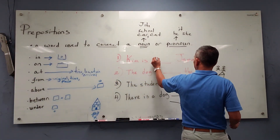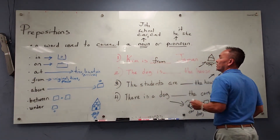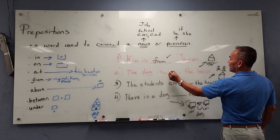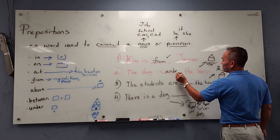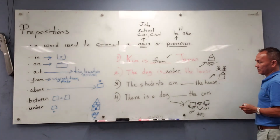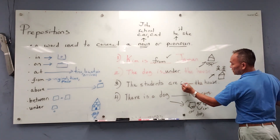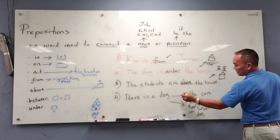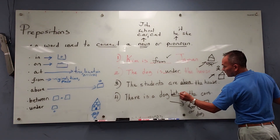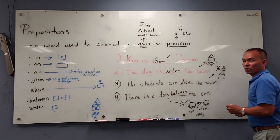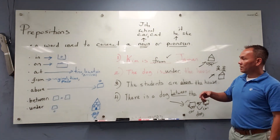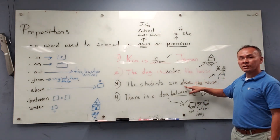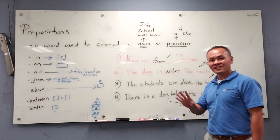If you say from — Kim is from Japan — you are great. If you say the dog is under, you are great. If you say the students are above, you are great. If you say the dog is between the cars, then you are excellent. Say together: from, under, above, between. This is Dr. Howard.